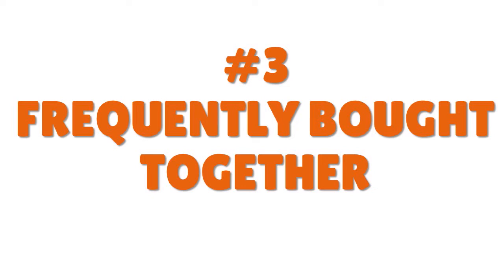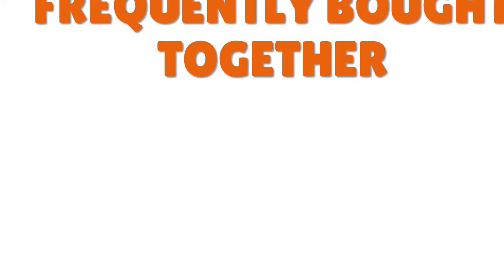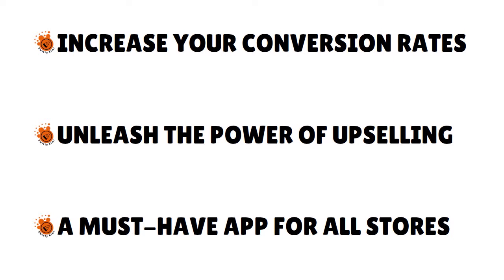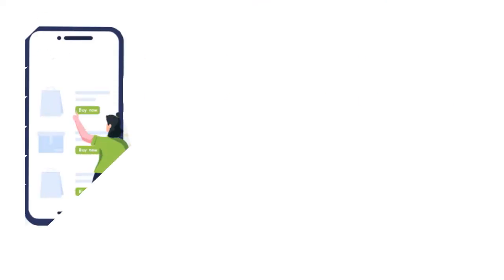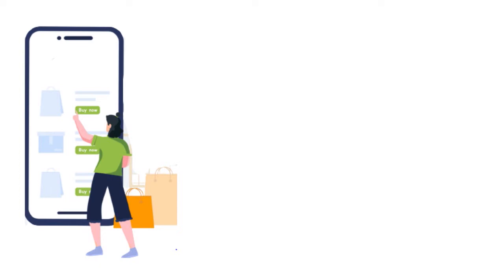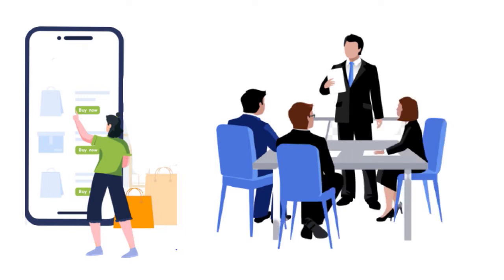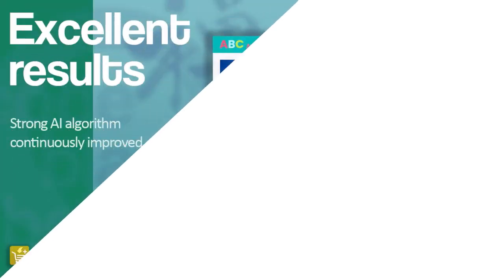The third app is Frequently Bought Together — a great name and a great app. It was developed by a company called Code Black Belt, who have been developing a series of very popular apps. This app allows you to increase your conversion rates and unleash the power of upselling using AI-driven tools. It's a must-have app for all stores — not just Shopify. It's often imitated but never duplicated. The Code Black Belt team has been doing this for a while and has built in a lot of features and modules to help you stand out in the market.